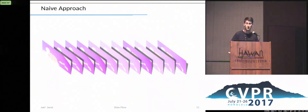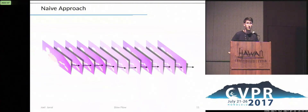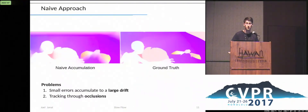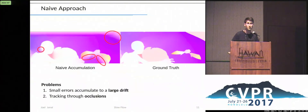This can be done naively, just using a state-of-the-art optical flow method and summing up the flow vectors along the trajectory. But there are two problems with that. First, small errors will accumulate to a large drift. And second, pixels need to be tracked through occlusions; otherwise, errors again accumulate, as in this example. To alleviate the drift problem, we reason over multiple frames for the flow estimation of high-speed frames. And to handle the occlusions, we formulate a dense tracking problem.